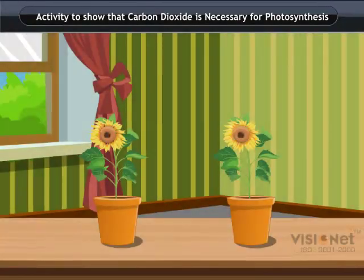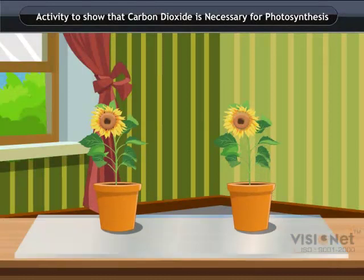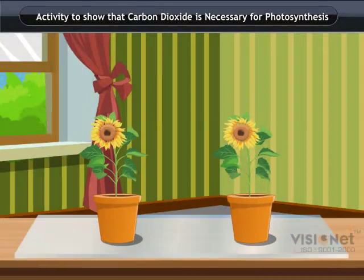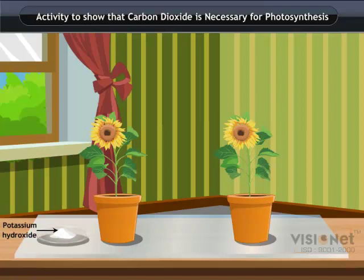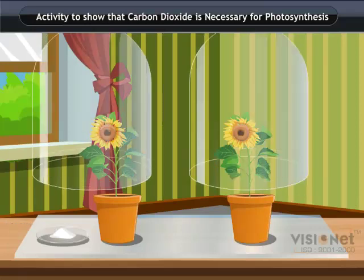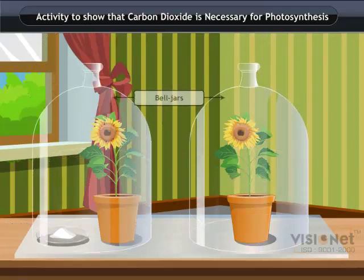Now place each plant on separate glass plates. Place a watch glass containing potassium hydroxide by the side of one of the plants. The potassium hydroxide is used to absorb the carbon dioxide. Cover both of the plants with separate bell jars as shown.